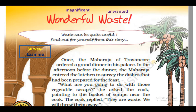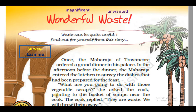Once the Maharaja of Trevancore ordered a grand dinner in his palace — eek baar Trevancore ki Maharaja ne aapni mahal mein sandar dinner ka order diya. In the afternoon, before the dinner, the Maharaja entered the kitchen to survey the dishes that had been prepared for the feast. He asked the cook, pointing to the basket of scraps near the cook, 'What are you going to do with those vegetable scraps?' — Tum in vegetables ke chilko ka kya karo ge? Usne cook se puchha, joh uske paas basket ke andar rakhhi hoi thay, unko point karte hoi.